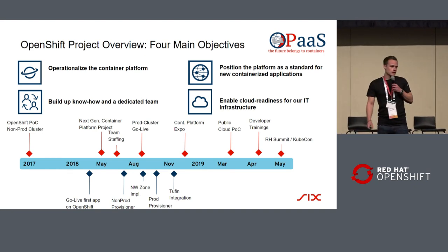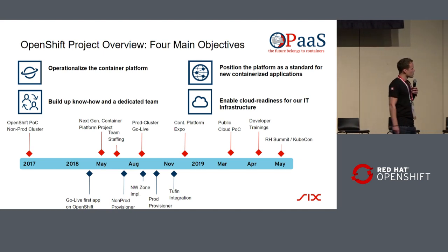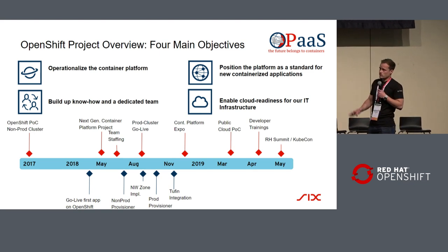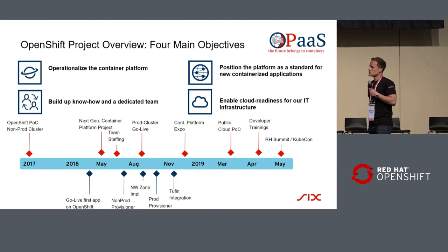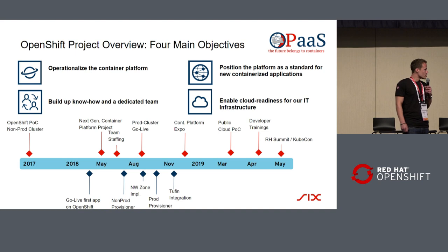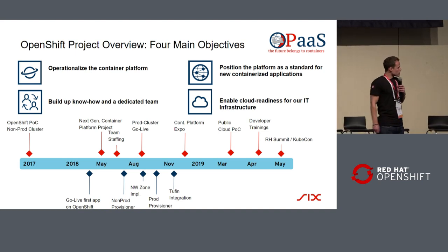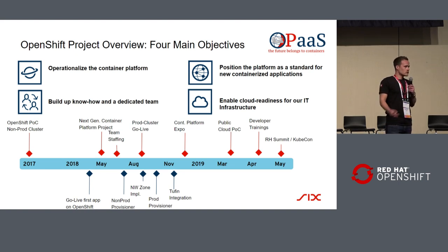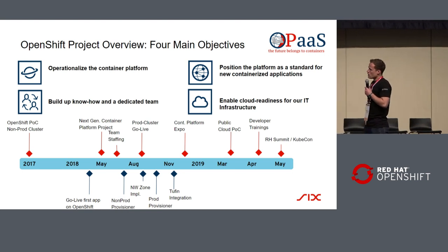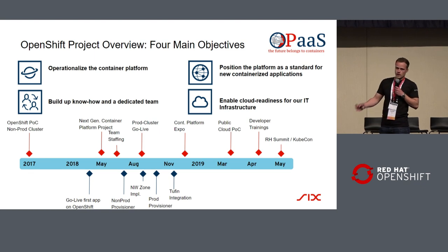Mark created a project provisioner that automatically creates a project on OpenShift. In August, we had the network zone implementation. We have about 30 network zones, so it's quite a challenge to implement all those and also engage with the security guys, firewall guys, and so on. The next thing was Tufin integration — it's firewall security software, and we did our own implementation on OpenShift and Tufin.